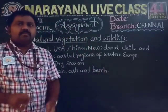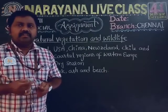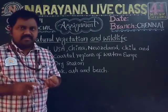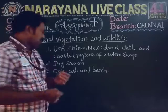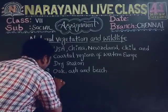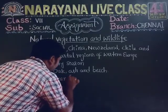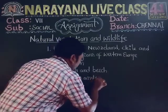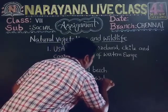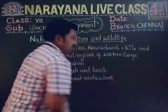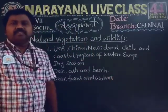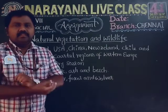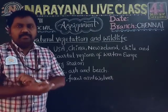The fourth question: name some animals found in temperate deciduous forests. The answer is foxes, deer, and wolves.